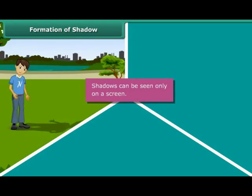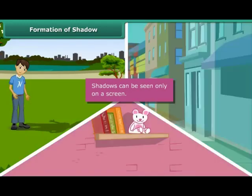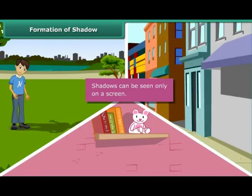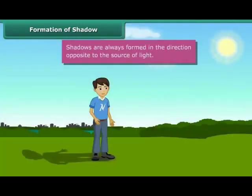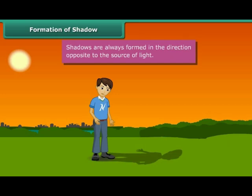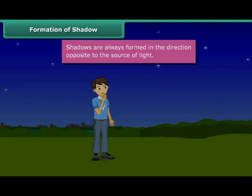Shadows are formed when an opaque object is placed across the path of light. Shadows can be seen only on a screen. The ground, walls of a room, buildings, and other such surfaces act as screens for shadows. Shadows are always formed in the direction opposite to the source of light. In the morning, since you were facing the sun, the shadow was behind you. In the evening, the sun was behind you, causing the shadow to be formed in front of you. When the sun sets, there is no light, and hence there are no shadows.